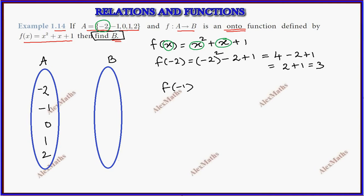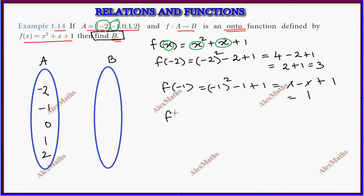So minus 1 is the second value. If minus 1 is substituted, we get minus 1 whole square minus 1 plus 1. So 1 minus 1 plus 1 — the minus 1 and plus 1 cancel, giving a total of 1.